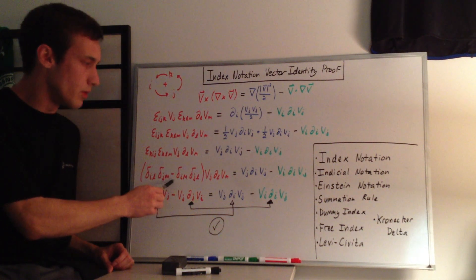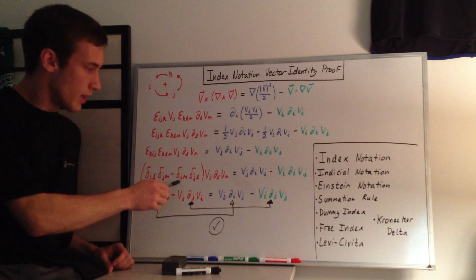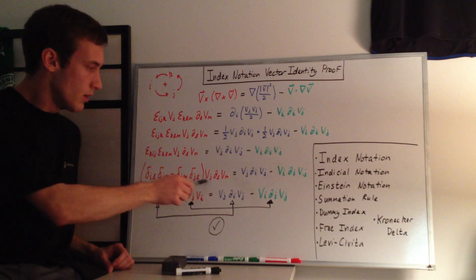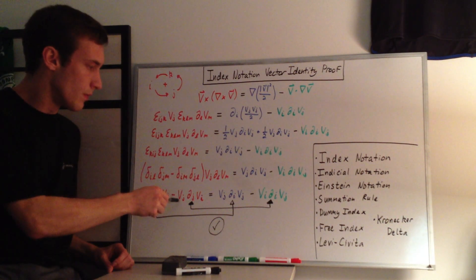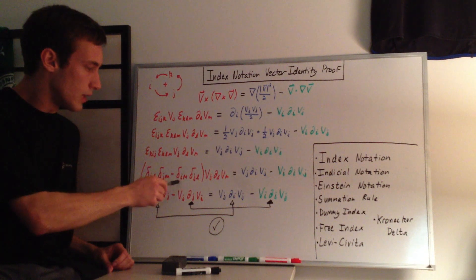For the second term, we do the same thing, so we're just distributing this through to this term. So we have, if it's an m, it becomes an i. If it's an l, it becomes a j. So the j here is already a j, so that's v_j. This l becomes a j, so that's d_j. And then this m becomes an i, so it's v_i.